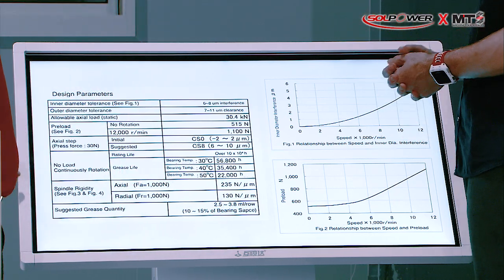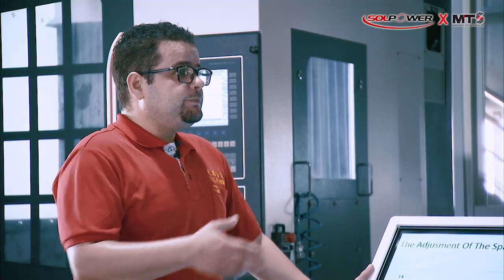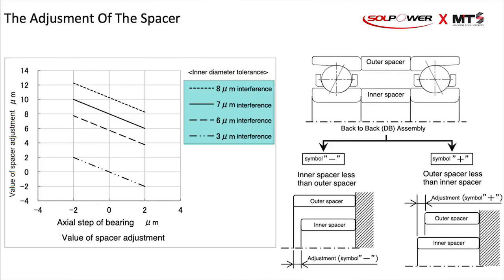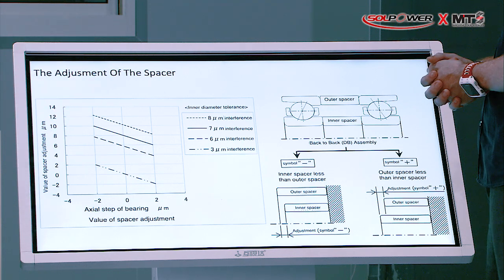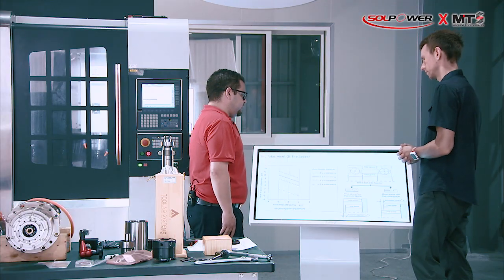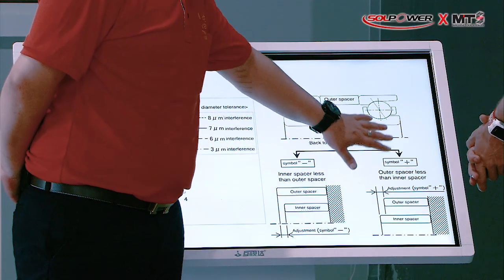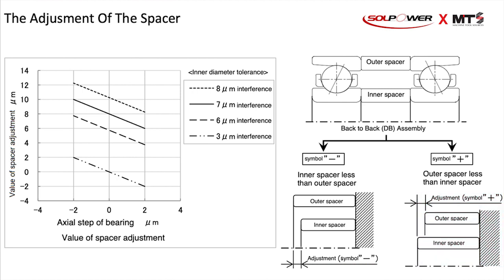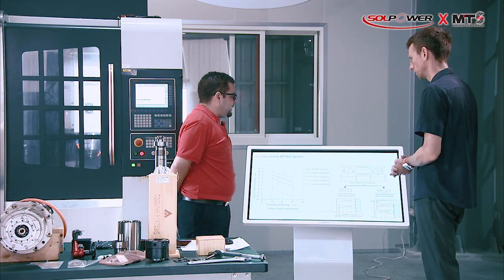We use the correct spacer data to perform preload adjustment. The interference between the bearing inner ring and the shaft determines the correction amount of the spacer ring that needs to be ground. The tolerances are very tight — very high accuracy. When the outer ring of the spacer is higher than the inner one, the preload increases; when it's lower, the preload decreases.